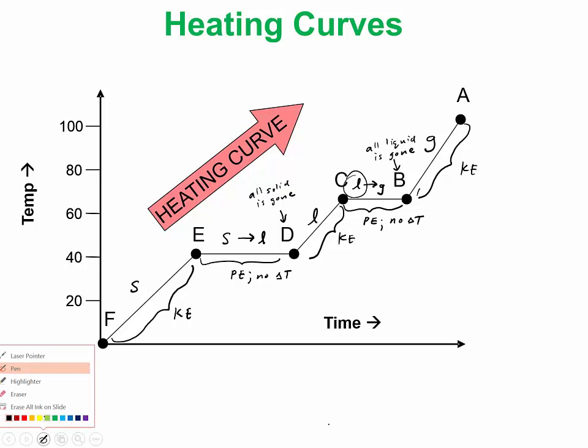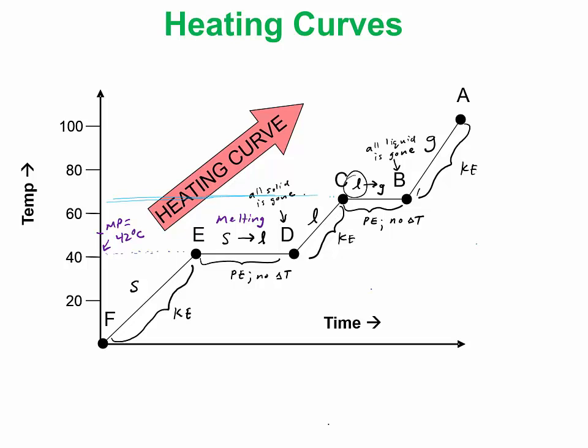Before we get to the equations, there's a couple things you could pull from this heating curve. Since it's going from solid to liquid, it is melting here. You could determine the melting point by looking at the graph here. The melting point is right about 42 degrees Celsius. You could also pull the boiling point off of this by looking at this line right here. The boiling point must be about 65 degrees Celsius.